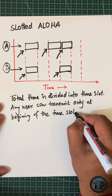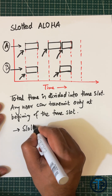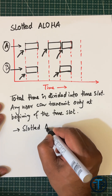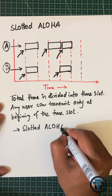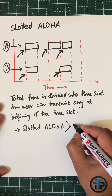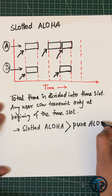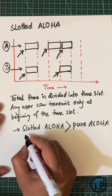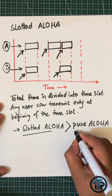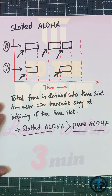It has been observed that slotted ALOHA is much better than pure ALOHA because of the vulnerability of the time frame, and that we can discuss in the next one.